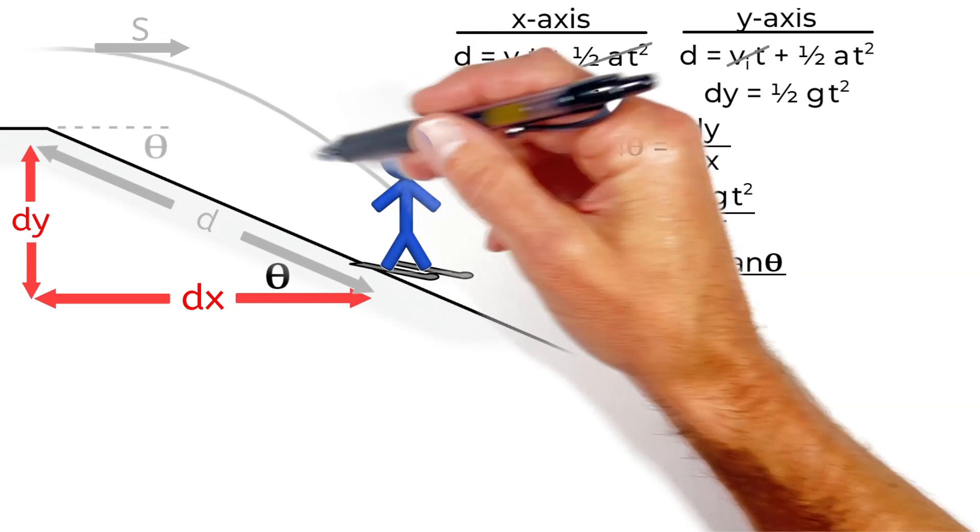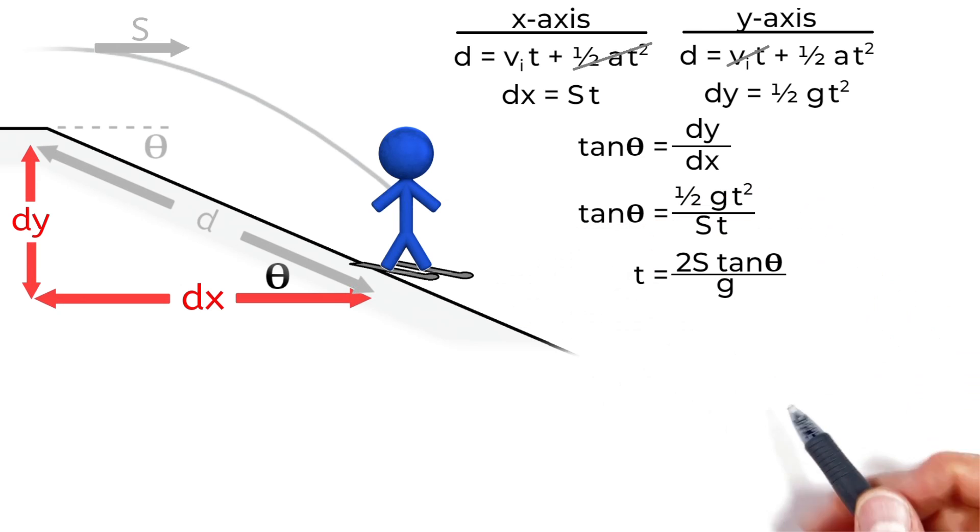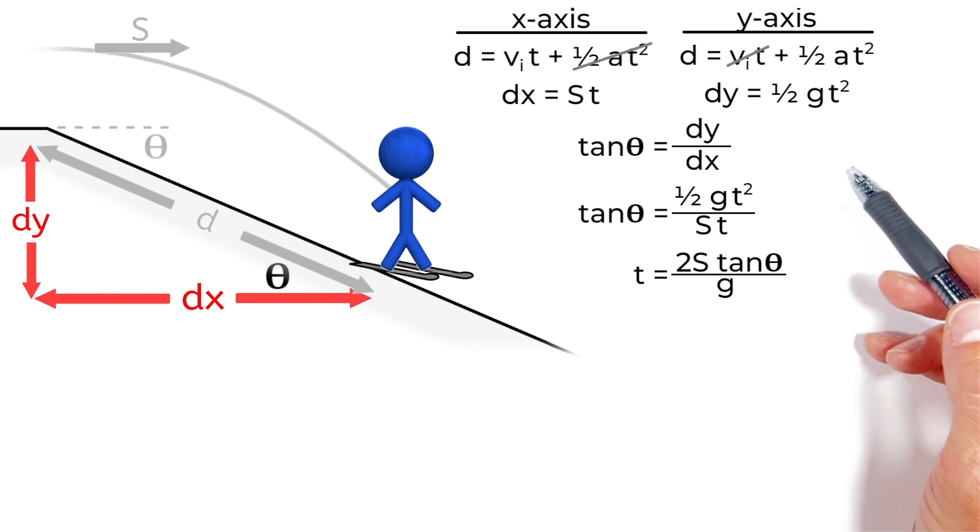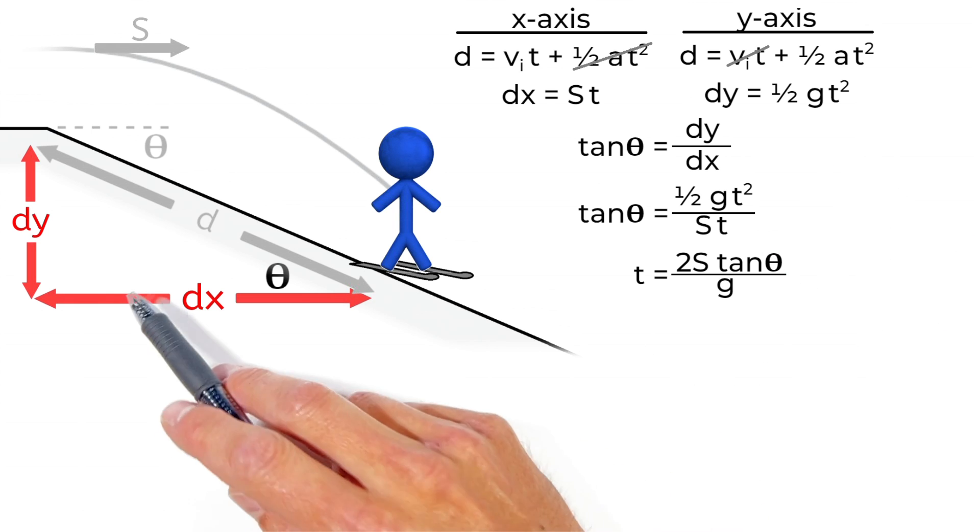Now, we're not trying to solve for how long the skier spends in the air, but we can use this time and plug it back into either of these equations to solve for the displacement either in the x or y-axis.